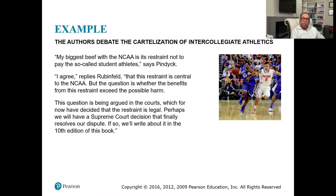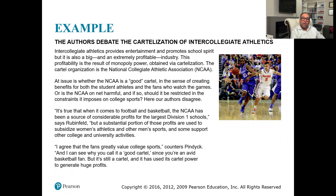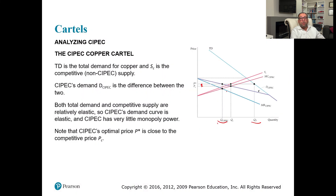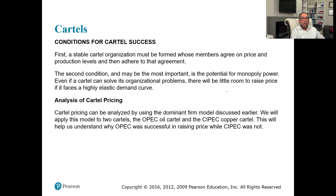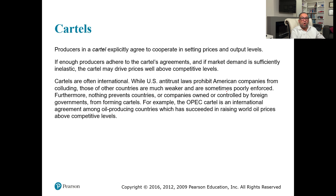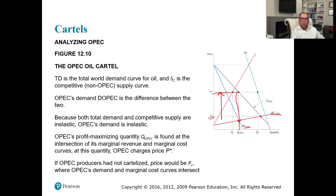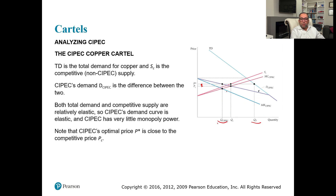These are two practical cases of cartel making in the U.S., where cartel making is not legal. However, the world cartels we discussed — OPEC and CIPEC — are legal, and we cannot enforce U.S. law on these independent countries. This is all we wanted to discuss about monopolistically competitive markets and oligopoly. In the coming last chapter of this course, we will discuss game theory in detail. Thank you very much, see you in the next video.